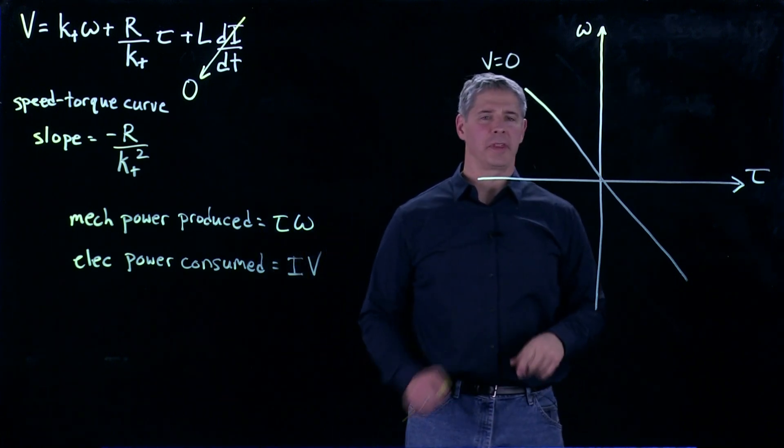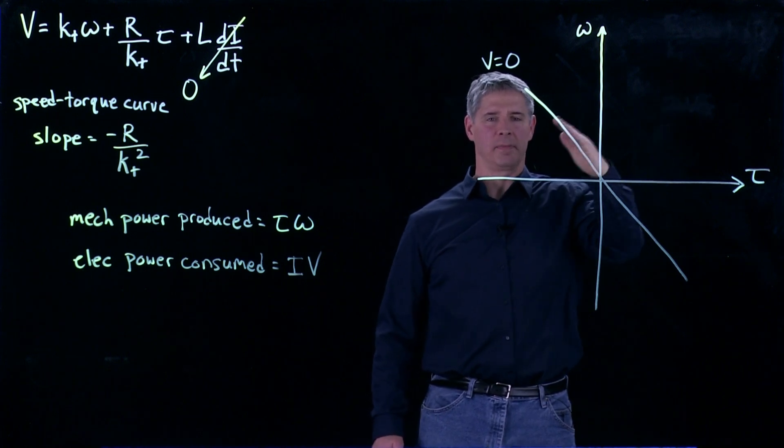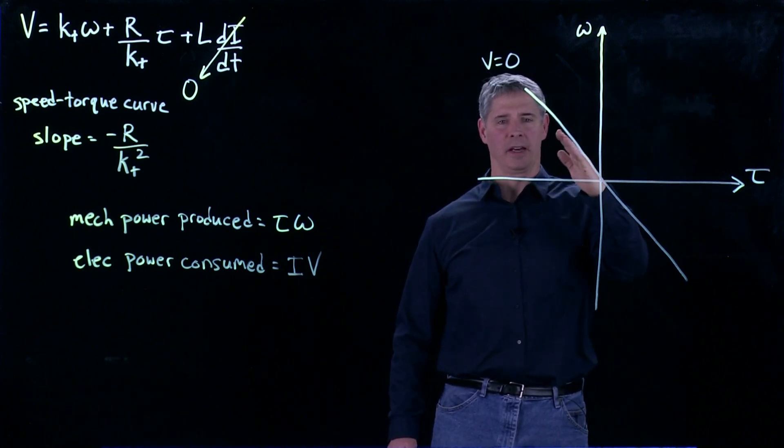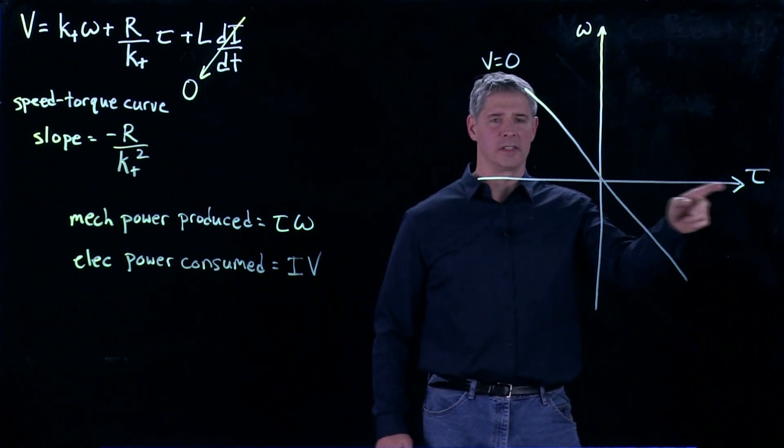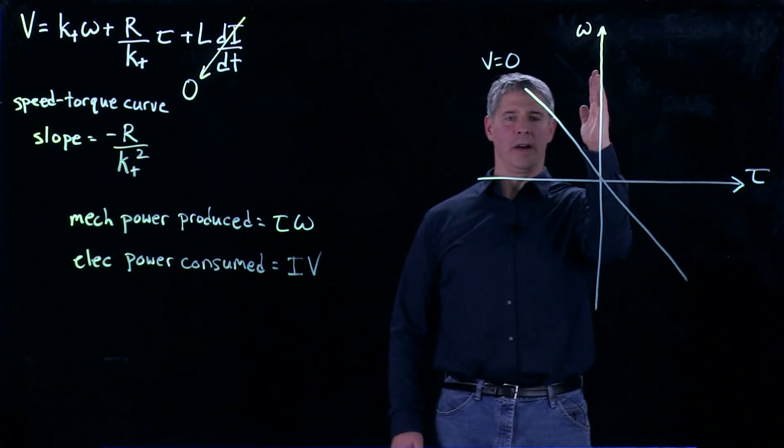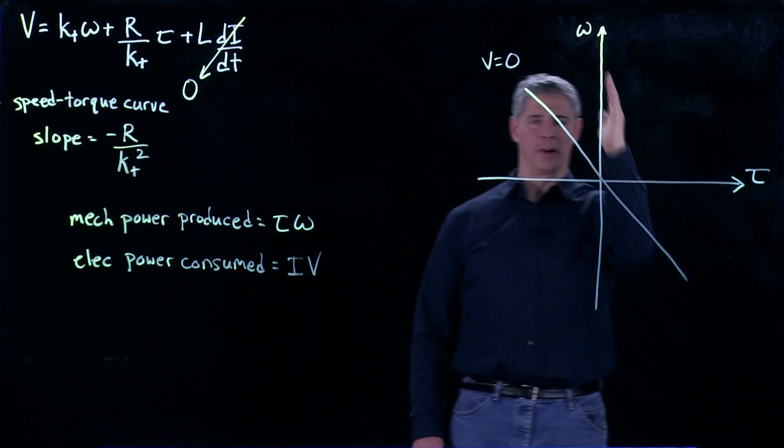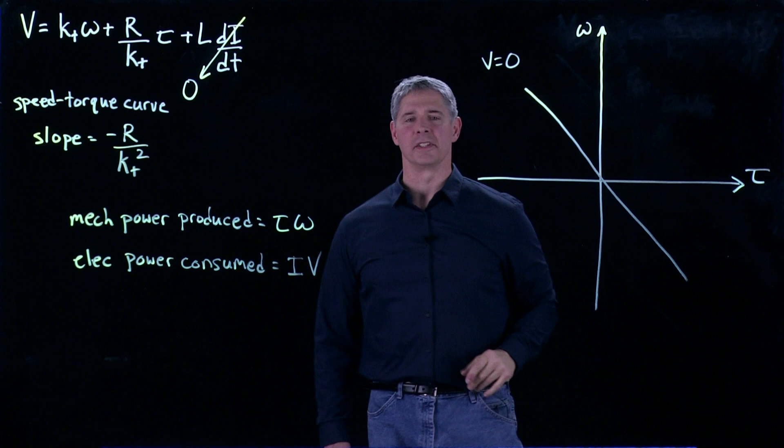Then everything on this side is positive voltage, and everything on this side is negative voltage. And we know that the current is directly proportional to torque, so everything going this way is positive current, and everything going this way is negative current.